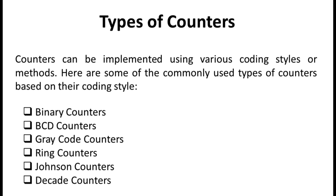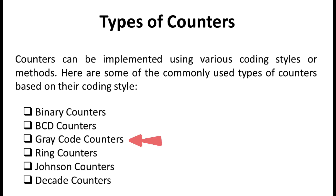We can implement counters using various coding styles. Commonly used counters are binary counters, BCD counters, gray code counters, ring counters, Johnson counters, and decade counters. Binary counters count in binary — that is, zero or one. BCD counters, which are decimal counters, follow a sequence of 10 states and return to zero after a count of nine. Such a counter must have at least four flip-flops to represent each decimal digit, since a decimal digit is represented by a binary code with at least four bits.